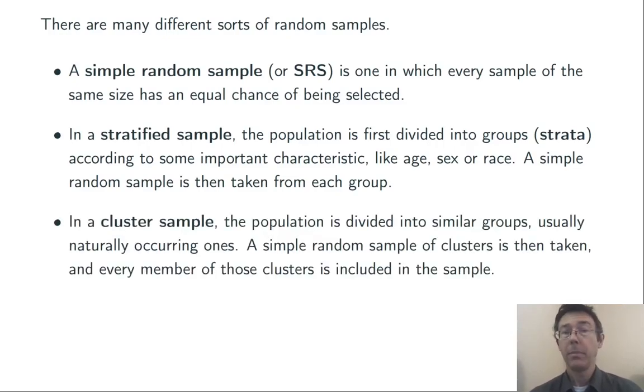In a cluster sample, the population is also divided into groups. This time, however, the groups tend to be similar, sometimes naturally occurring ones. And then a simple random sample of clusters is taken, so the randomization takes place at the cluster level. And then every member of the selected clusters is included in the sample.